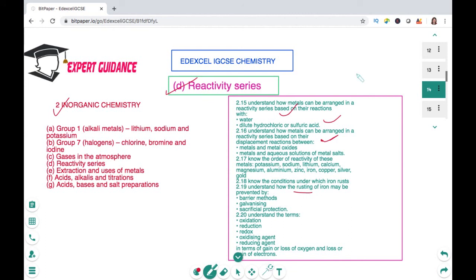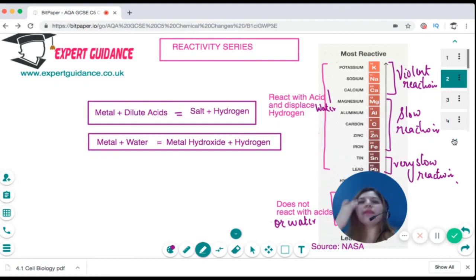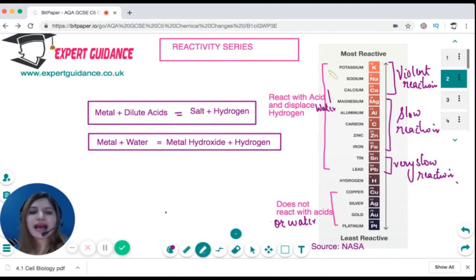Now if you remember from the topic when we were doing metals, we discussed the reactivity series. So reactivity series is a series where we have the most reactive element at the top and less reactive at the bottom. Now although there are mostly metals here, we have two non-metals - you can see we have hydrogen and carbon.